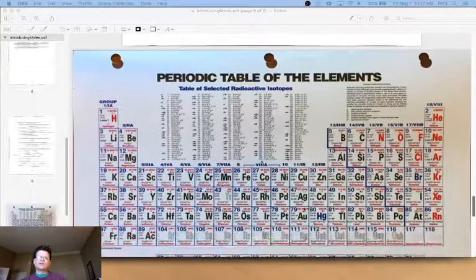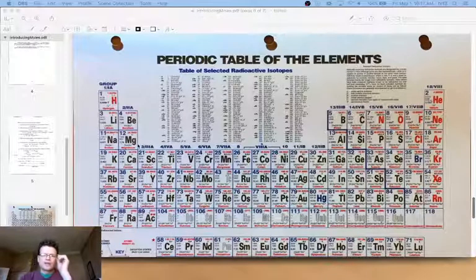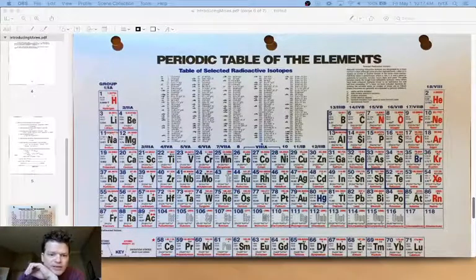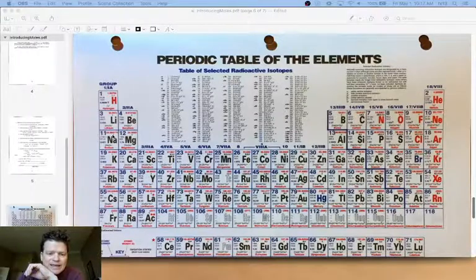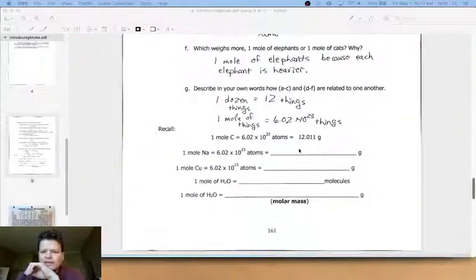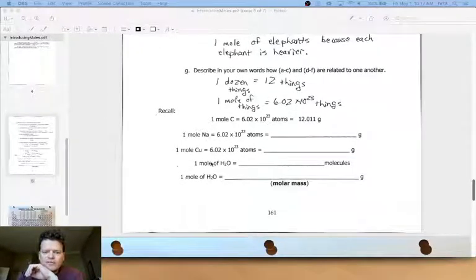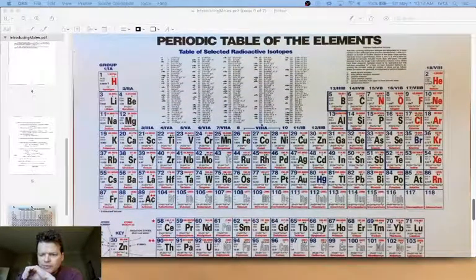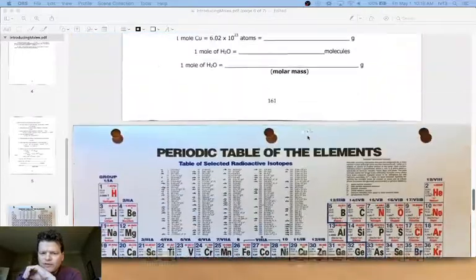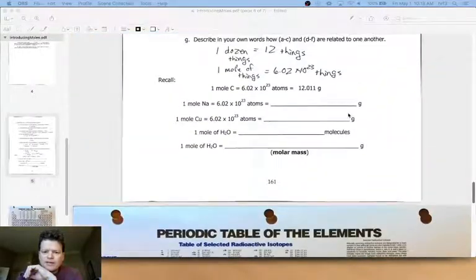And to figure that out you have to go to the periodic table. It's a little bit hard to see here but the number is 22.99. So we would put that in there. That's how many grams are in a mole of sodium. Similarly for copper it's still going to be 6.02 times 10 to the 23rd. But then you have to look up copper and it's 63.55. So that's how many grams.